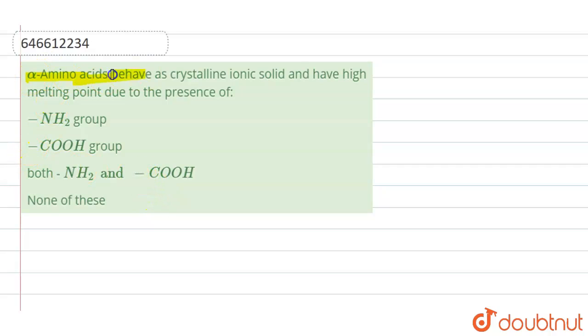The question is: alpha amino acids behave as crystalline ionic solids and have high melting points due to the presence of what?